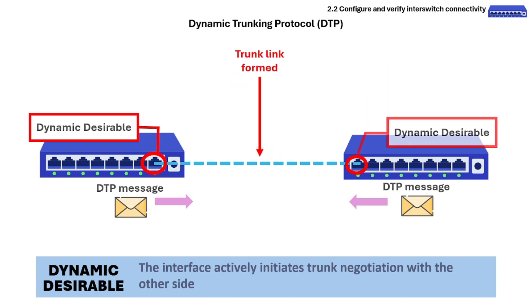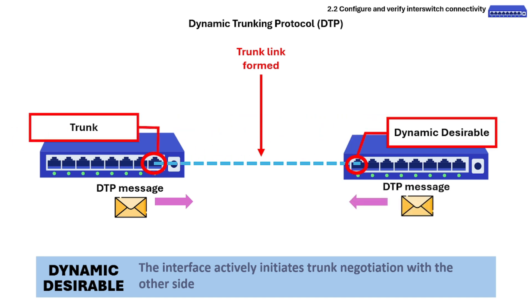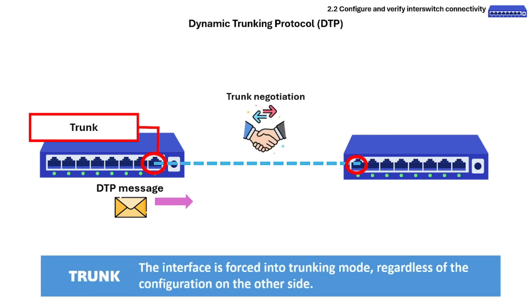Here are examples of when a trunk link will form. Case 1 is when both sides are Dynamic Desirable. Case 2 is when one side is Dynamic Desirable and the other is Dynamic Auto. Case 3 is when one side is Trunk and the other is Dynamic Desirable. Trunk mode forces the interface into trunking mode regardless of the configuration on the other side, and it will still send DTP messages to negotiate the trunking protocol.